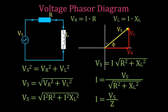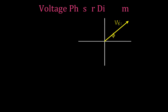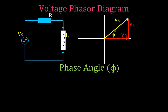This is our phasor diagram, this is how we calculate the voltage, and this is how we calculate the current. Now we're going to get the phase angle phi — the angle that the voltage leads the current in this circuit. We have a right triangle, so we can use trig functions. In this case we use the tangent: the phase angle is the arctangent of the opposite over the adjacent. The opposite side is VL and the adjacent side is VR, so phi equals arctangent of VL divided by VR.